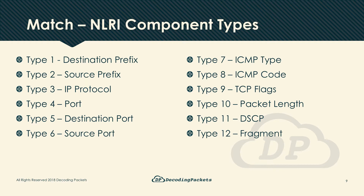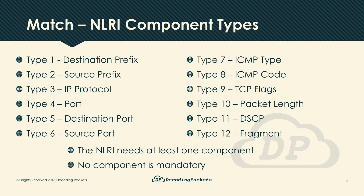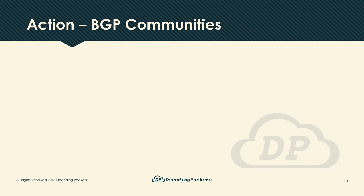Before moving on, two basic principles: first, each NLRI needs at least one component — an advertisement that is null serves no purpose. Second, none of the components are mandatory; as long as you provide at least one component, BGP is good to go to create and advertise an NLRI. With the NLRI and its components, we've solved the issue of matching traffic — but what do we do with the matched traffic?